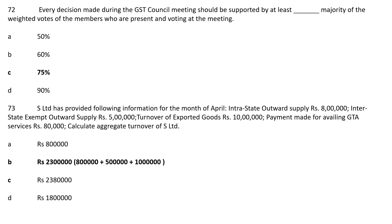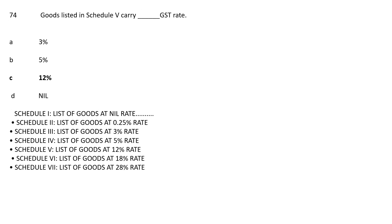Note: Payment made for availing GTA services of Rs 80,000 is not included in aggregate turnover. Question 74: Goods listed in Schedule 5 carry dash GST rate. Option A: 3%; Option B: 5%; Option C: 12%; Option D: Nil. The correct answer is Option C, 12%. Schedule 1: Nil rated; Schedule 2: 0.25%; Schedule 3: 3%; Schedule 4: 5%; Schedule 5: 12%; Schedule 6: 18%; Schedule 7: 28%.